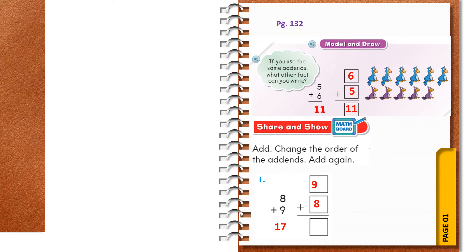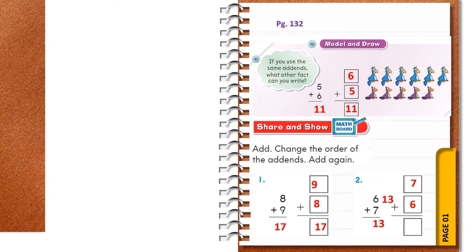When you change the order of the addends you get nine plus eight, and again you can draw the counter to find the sum — you still get seventeen. Second one: six plus seven. When you add six plus seven the sum is thirteen. Now change the order of the addends and write seven plus six — still the sum is the same, thirteen.